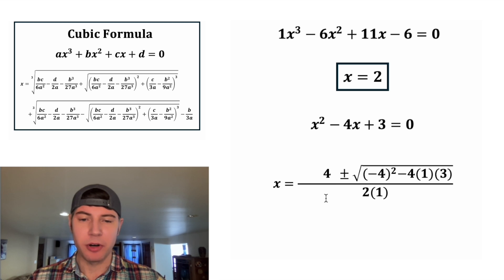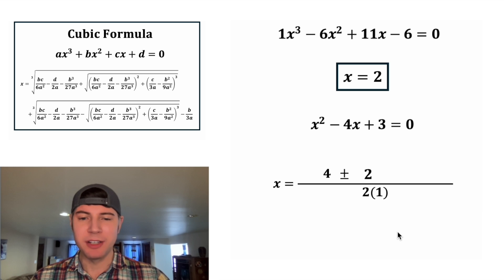Negative negative 4 is positive 4. Negative 4 squared is 16. And 4 times 1 times 3 is 12. 16 minus 12 is equal to 4. And square root of 4 is equal to 2. And then on the bottom, 2 times 1 is 2.